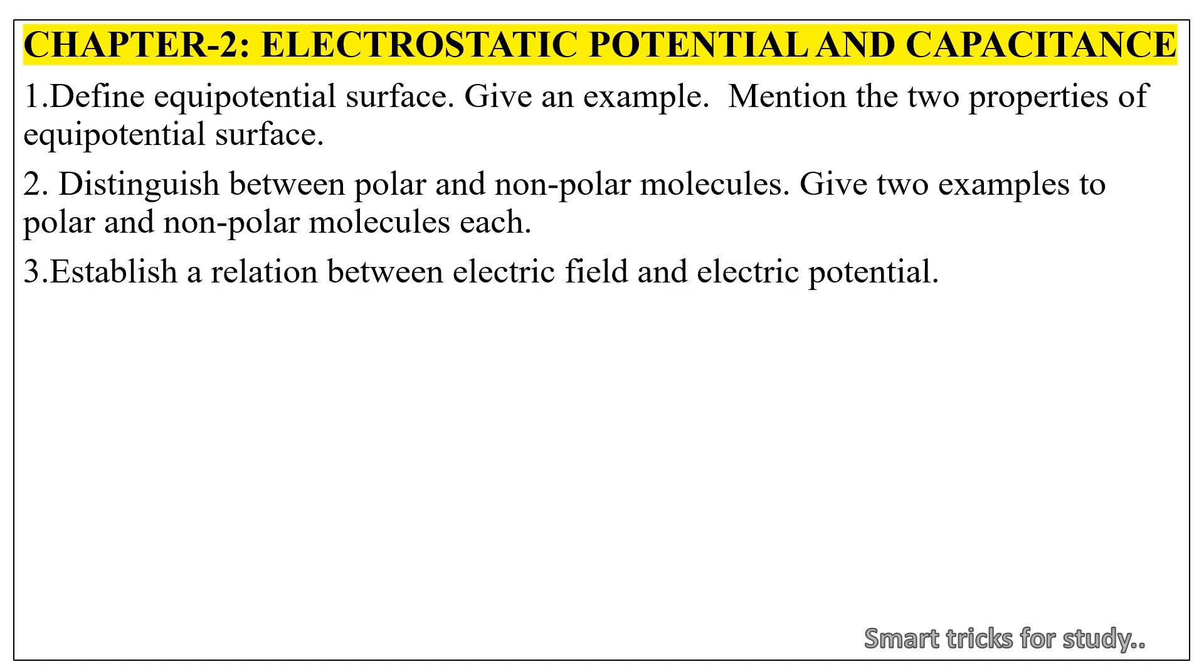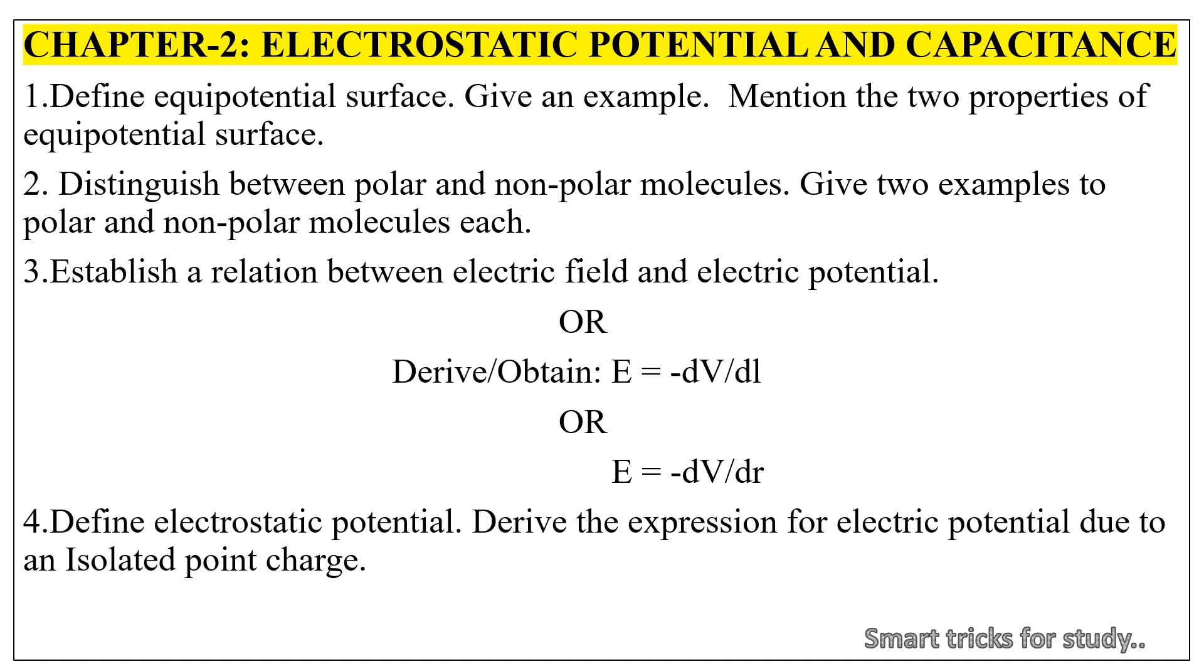3. Establish a relation between Electric Field and Electric Potential. Or Derive E is equal to minus dV by dL or E is equal to minus dV by dr. 4. Define Electrostatic Potential. Derive the expression for electric potential due to an isolated point charge.